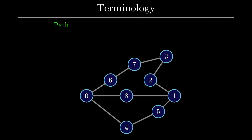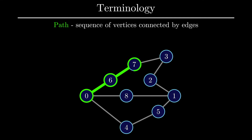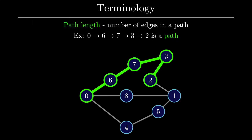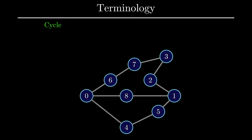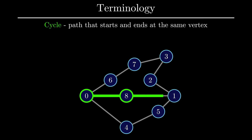Let's now talk about paths. Paths are simply defined as a sequence of vertices connected by edges. Most of the paths that we deal with will be paths with unique vertices. For example, one path from vertex 0 to vertex 2 is shown here, and all vertices in the path only show up once, which is what we will assume most of the time. One feature of paths is that they have respective lengths. A path length is simply defined as the number of edges in a path. In this example, the path length we have here would be 4. A related idea to a path is the concept of a cycle. A cycle is defined as a path that starts and ends at the same vertex. One key note about cycles is that all cycles are paths, but not all paths are necessarily cycles.